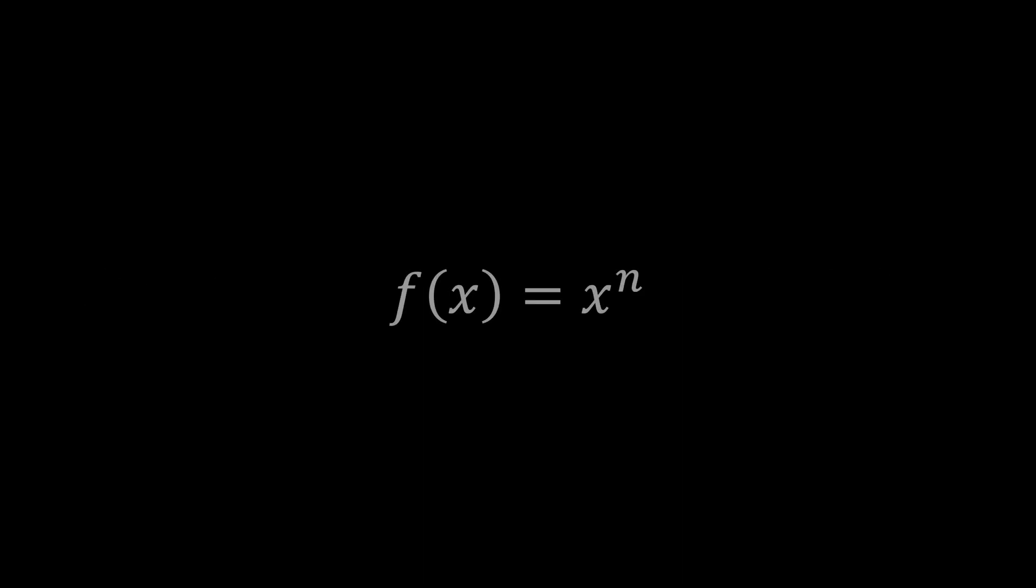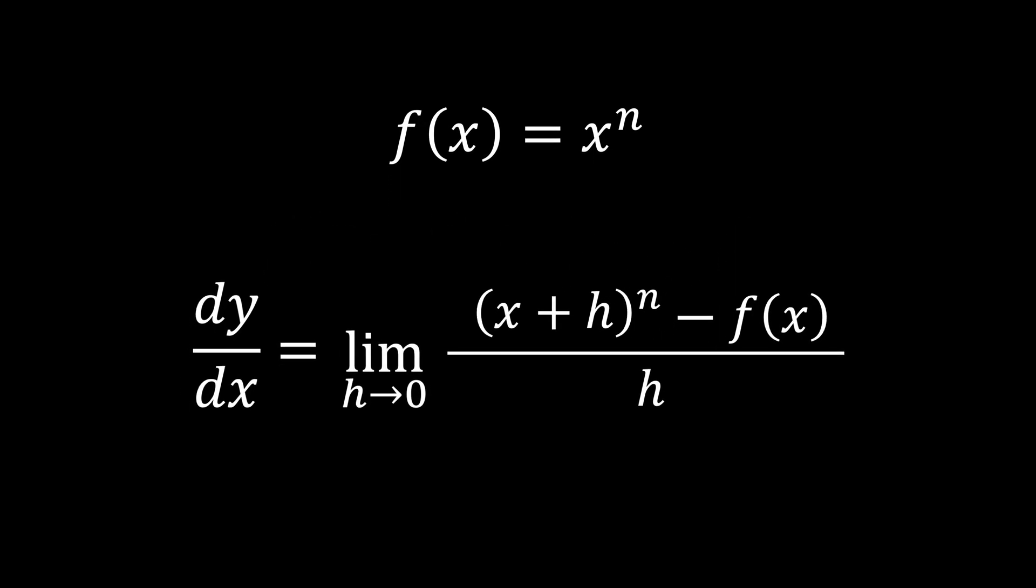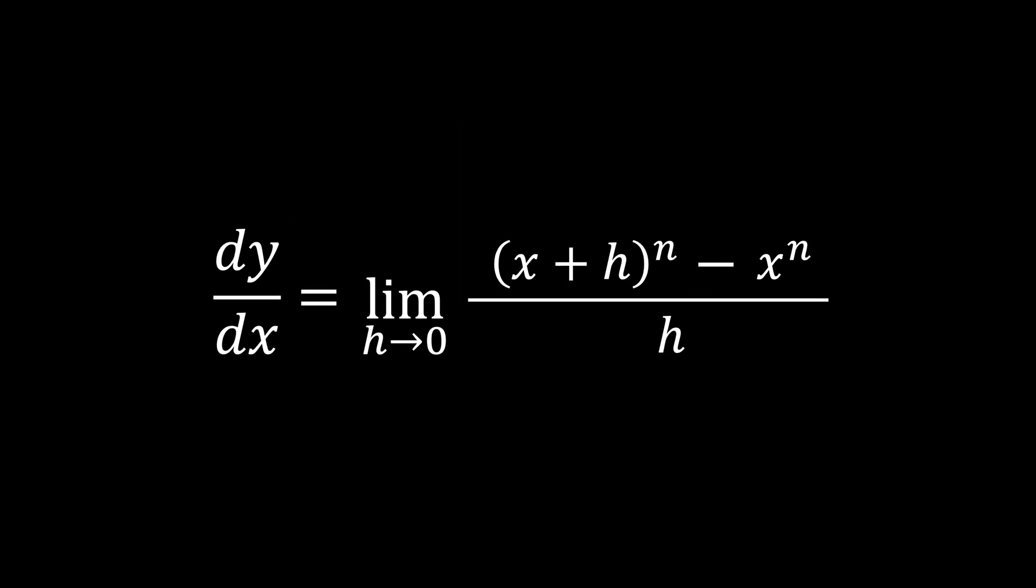Now, is there a quicker way to do this? Let's take a generic term, x to the power of n. Using the same approach, we substitute f of x plus h into the formula and expand x plus h to the power of n, using the binomial expansion.